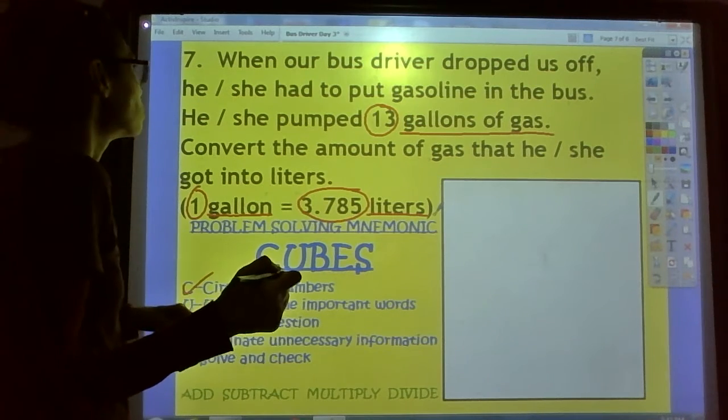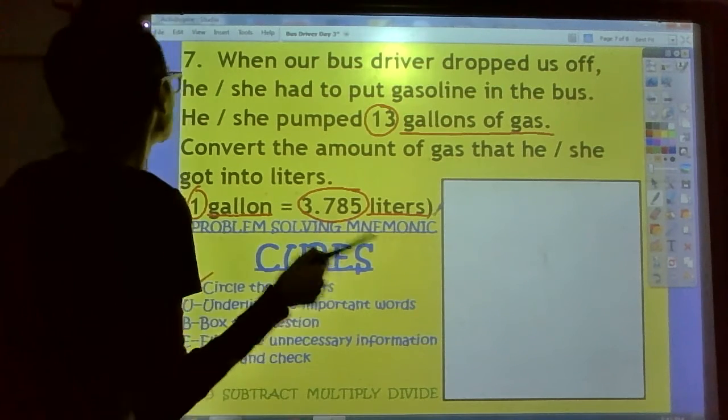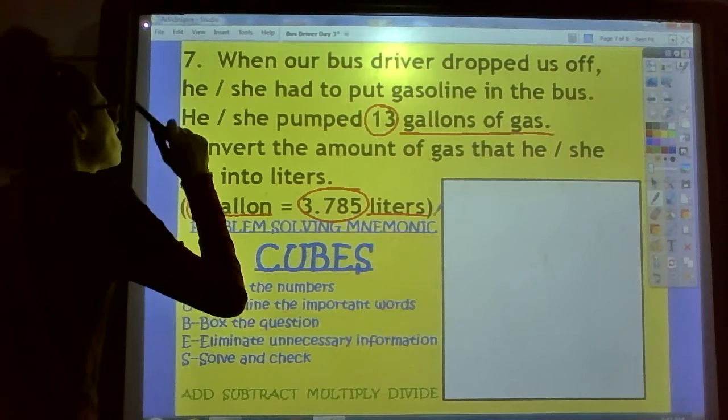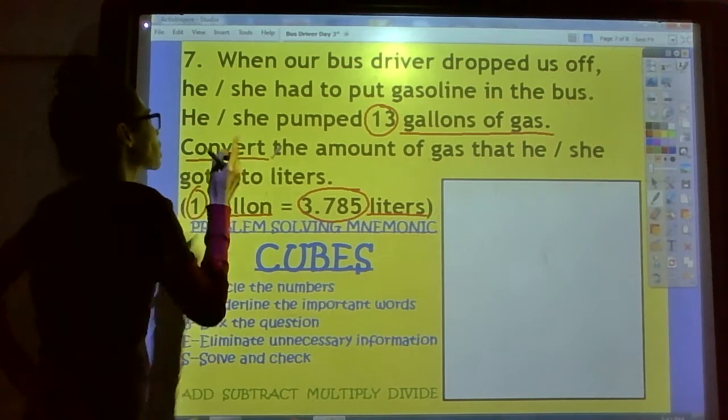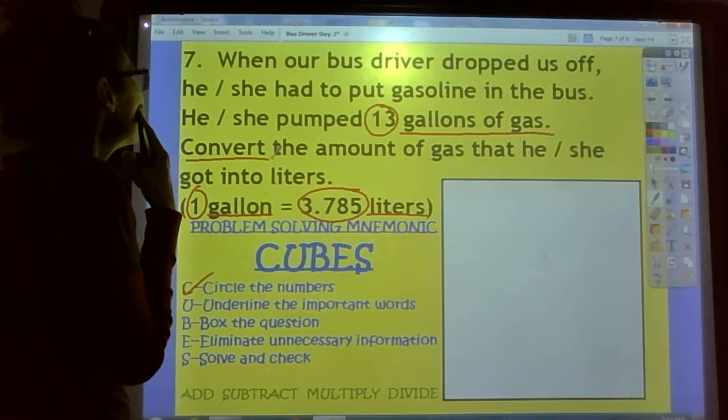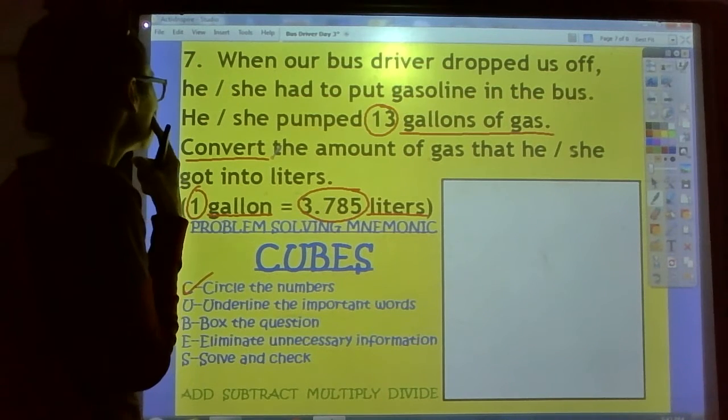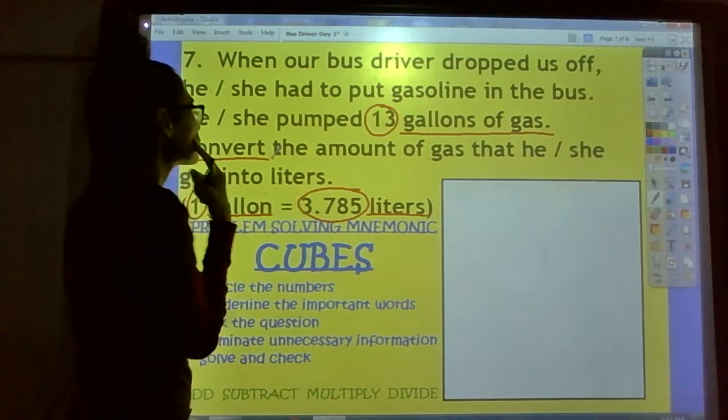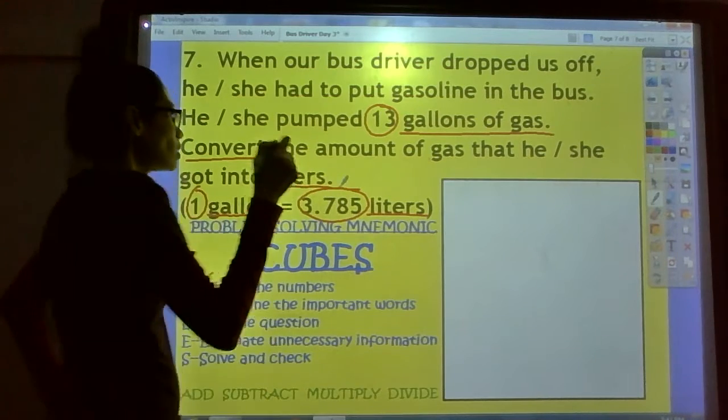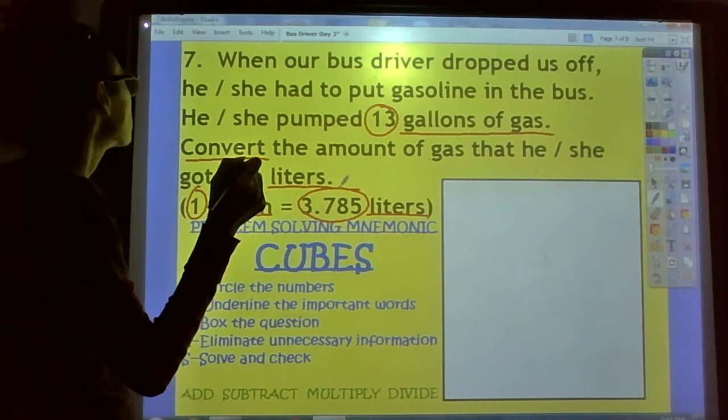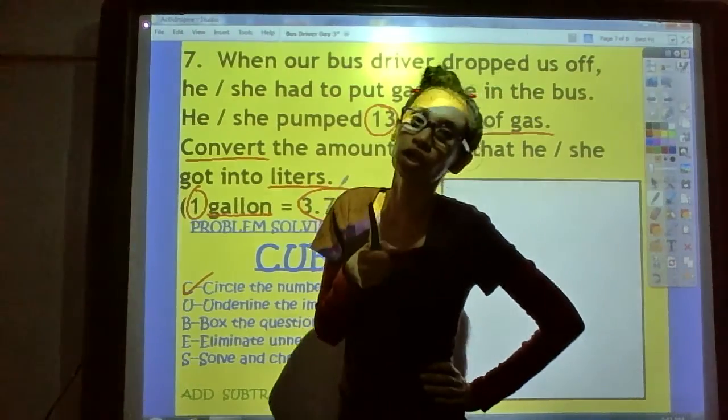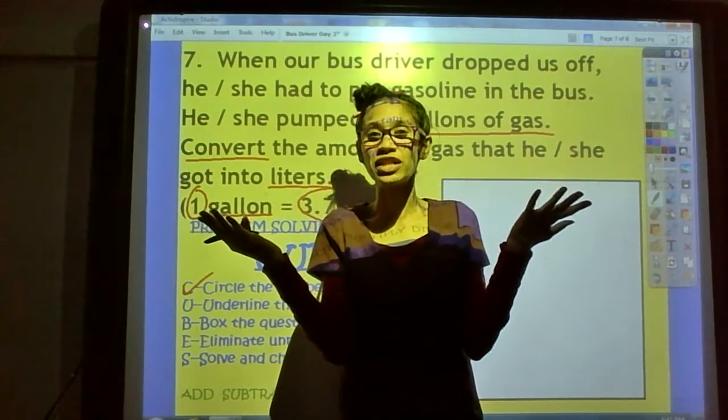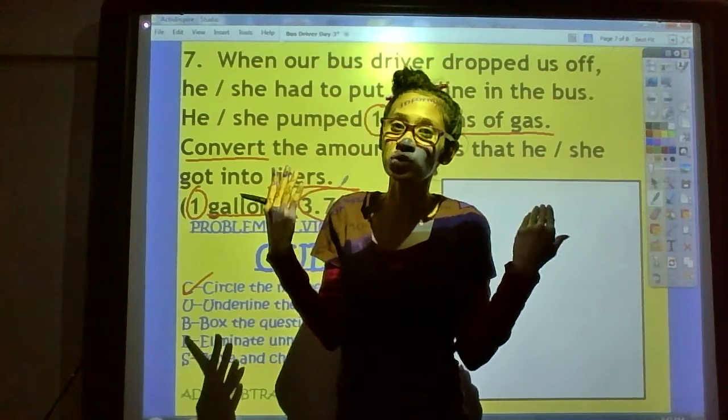And now, what do we do? Find other keywords. What do you see? What do we see? Oh, convert. That's a keyword. What else do you see that's important that we need? Oh, there's our other unit. And, you know what? I think we're good on that. If you underline other keywords, that's fine. If you need that to help you, I think we're good on this one.